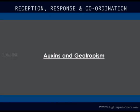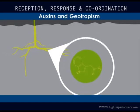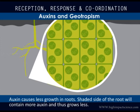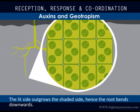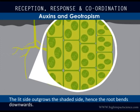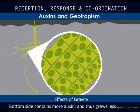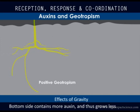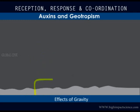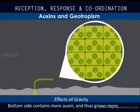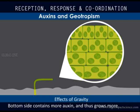Auxin and geotropism: auxins have the opposite effect on root cells. In roots, auxins cause less growth. The shaded side of the root will contain more auxin and so will grow less, enabling the lit side of the root to grow more and bend away from light. In a horizontal root, the bottom side contains more auxin and grows less, so the root bends downwards in the direction of gravity — positive geotropism. But the stem responds differently: in a horizontal stem, the bottom side contains more auxin because it is not directly hit by sunlight, and because auxin causes growth in stems, the bottom side grows more, causing the stem to bend upwards against the direction of gravity — negative geotropism.